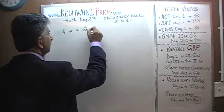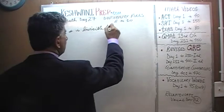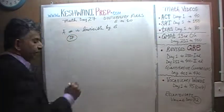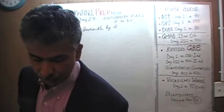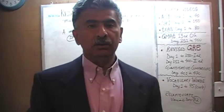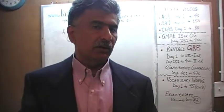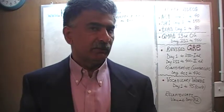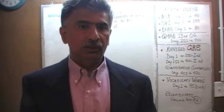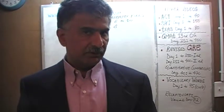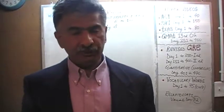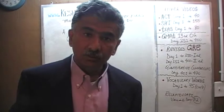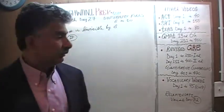A number is divisible by 6 if — well, it's actually a two-part rule. The way we figure out if a number is divisible by 6 is by determining that it is in fact divisible by both 2 and 3. If a number is divisible by both 2 and 3, and 2 times 3 is 6, then that number must be divisible by 6 as well. How do we know if a number is divisible by 2? Well, if it's an even number.